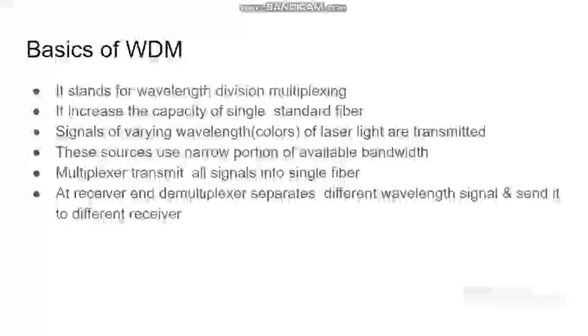The multiplexer transmits all signals into a single fibre. At the receiver end, the demultiplexer separates the different wavelength signals and sends them to different receivers.